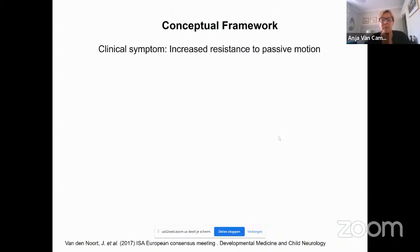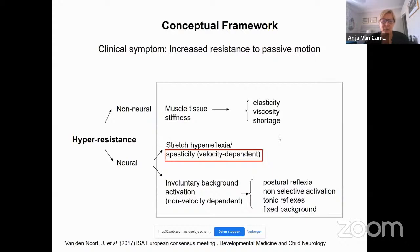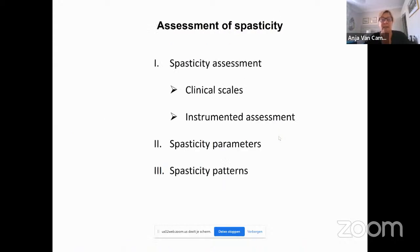When you look at the clinical system, you assess the increased resistance to passive motion. After a consensus meeting, it was decided that hyper-resistance has both a non-neural aspect — which is muscle tissue stiffness — and a neural aspect — which is spasticity or stretch hyperreflexia with some involuntary background activation. We can assess this with clinical scales, but as you will see, it is limited. That is why some centers developed instrumented assessment to differentiate the neural from the non-neural aspects.